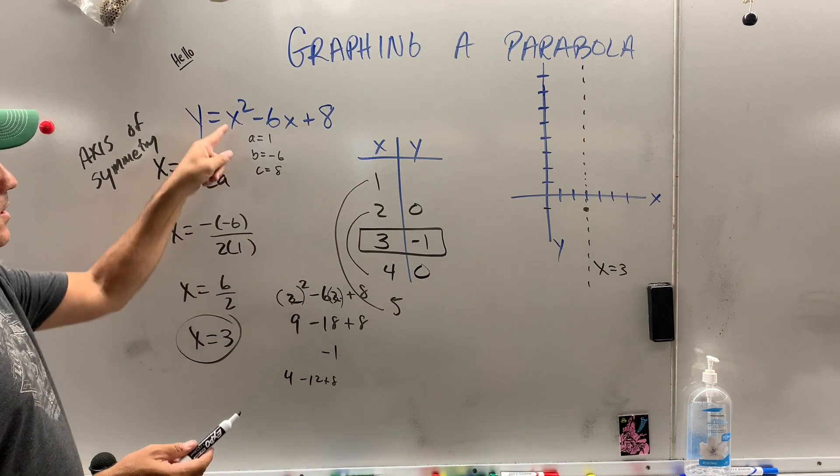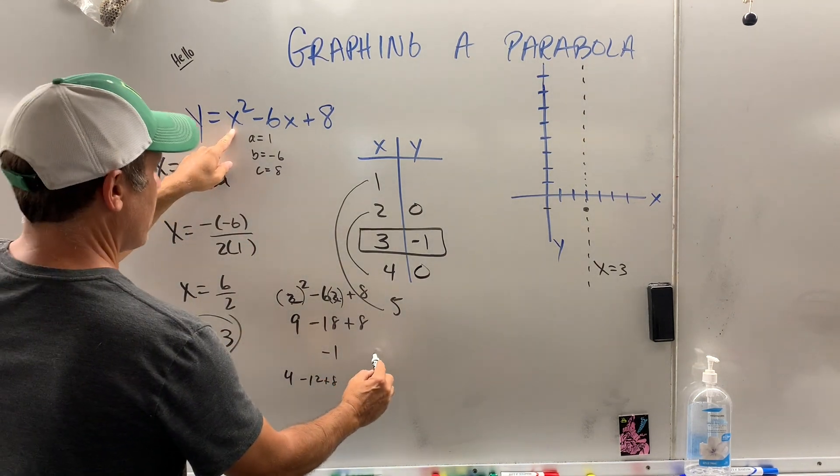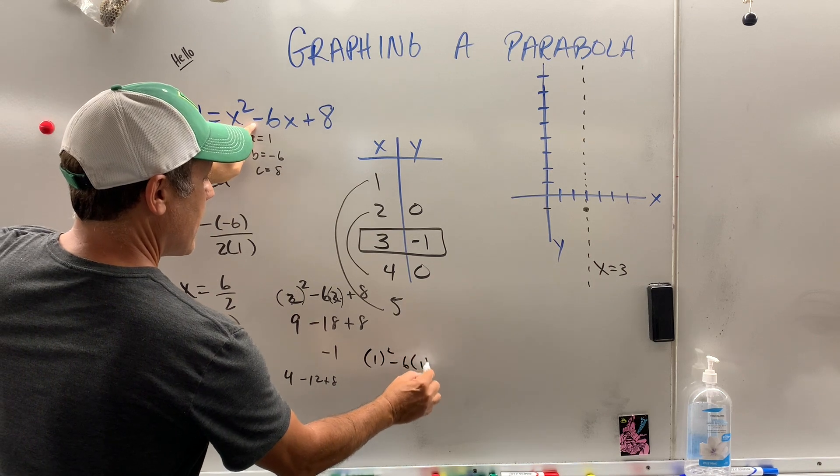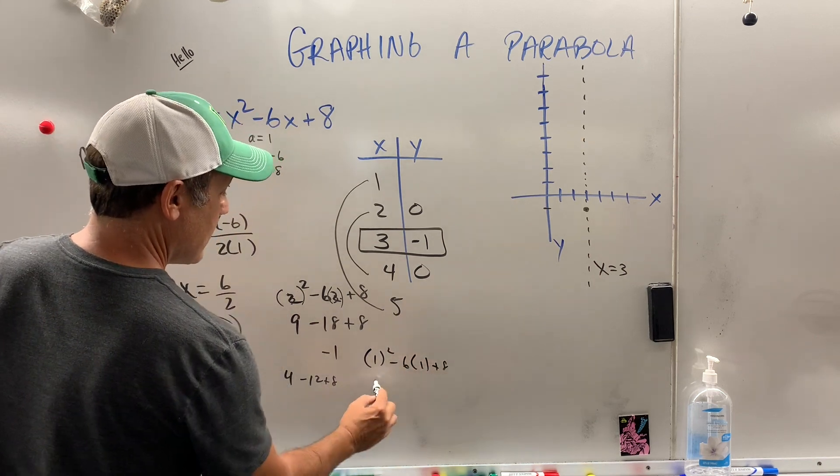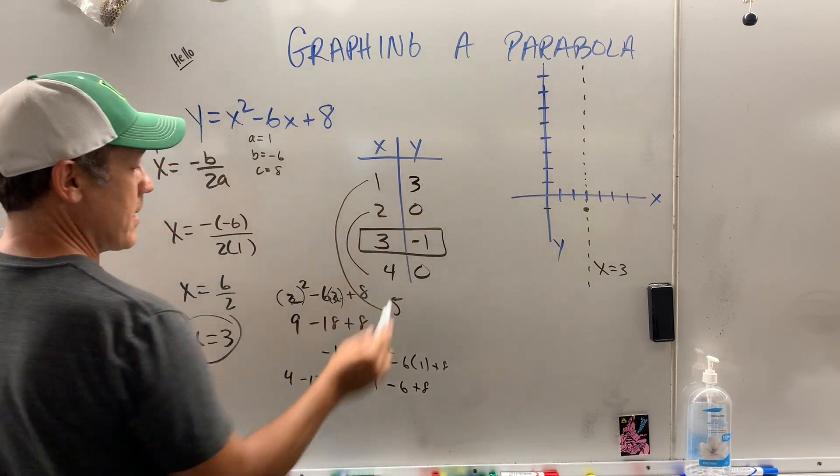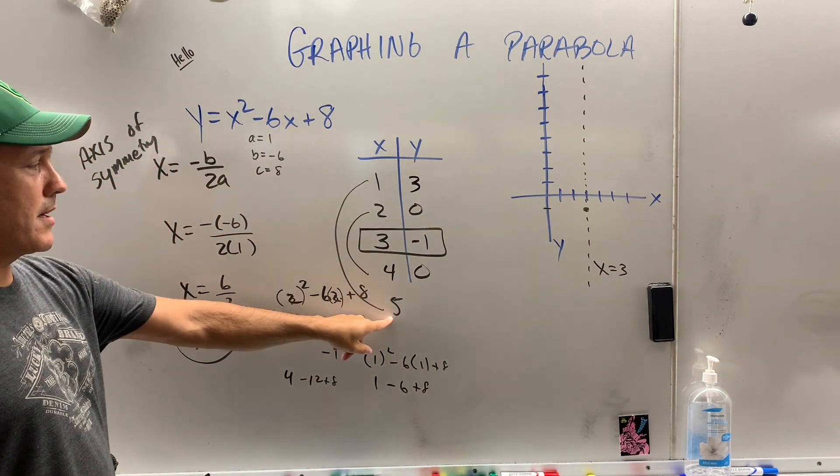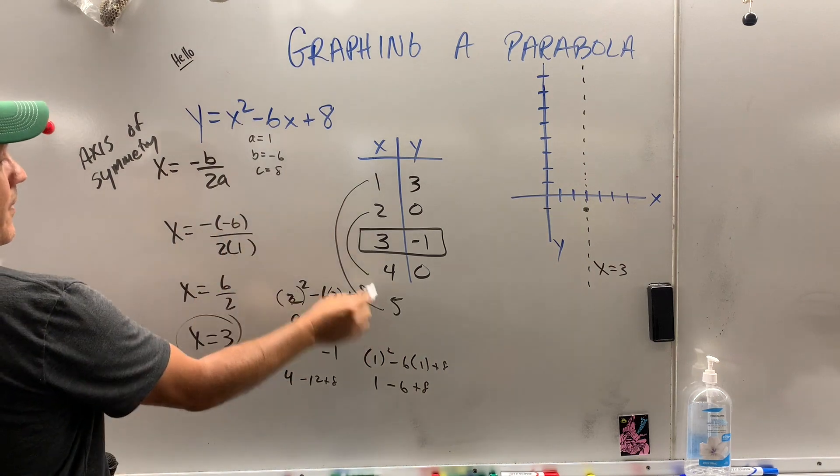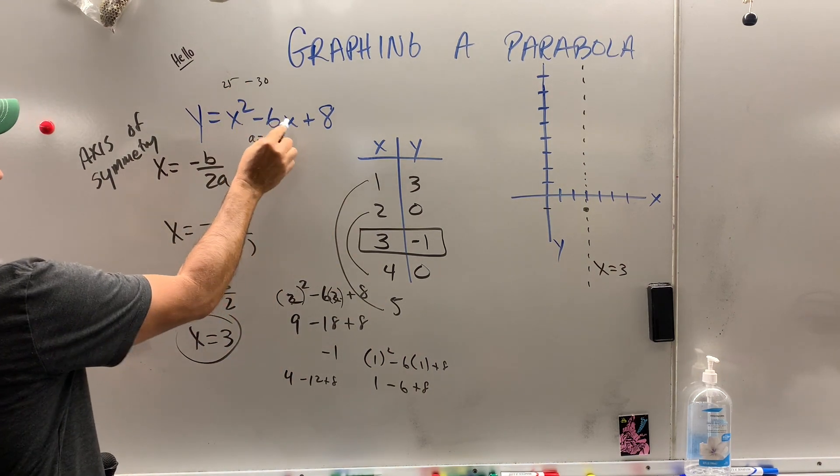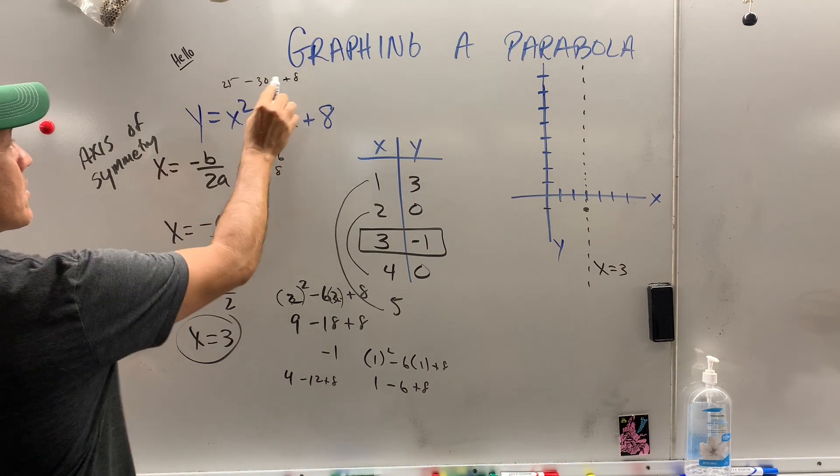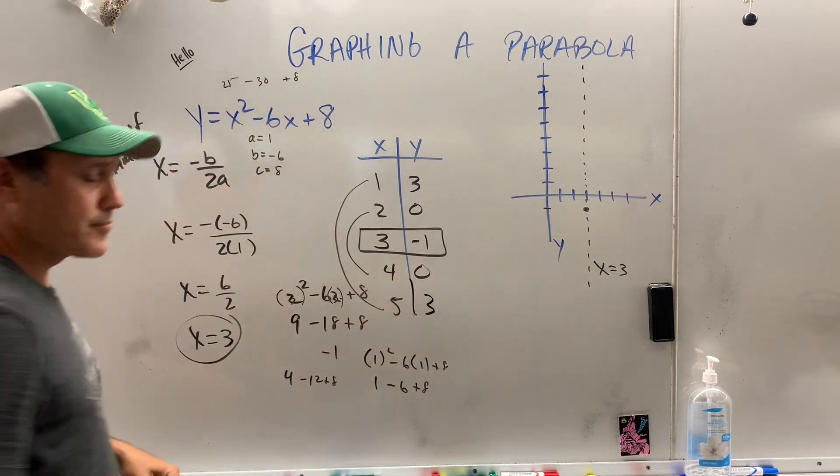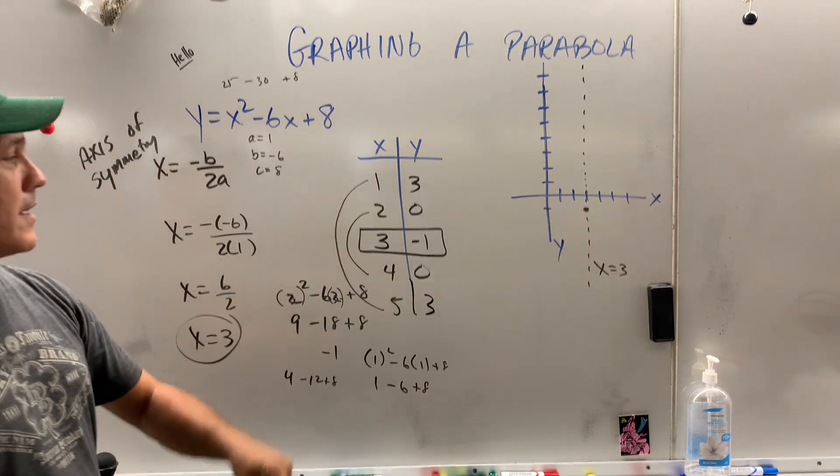Again, I'm going quick, but you could just take your time and plug them in. Let's do another one. 1 squared minus 6 times 1 plus 8. That's 1 minus 6 plus 8, which is 3. See, I can work fast because now I'm going to check my answer with this one. When I put 5 in here, that's 25 minus 30. Are you with me? I just multiplied 6 plus 8. That's 33 minus 30 is, you guessed it, 3.